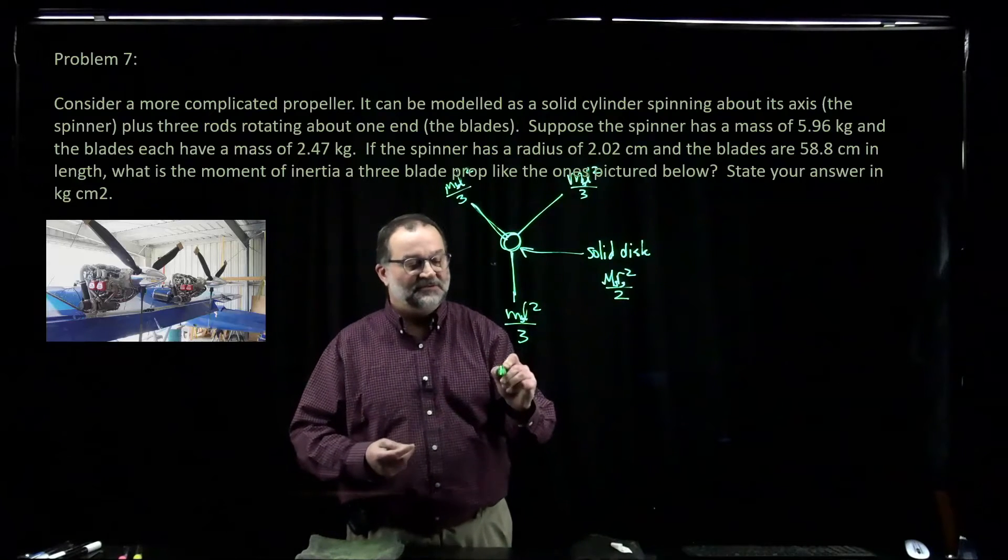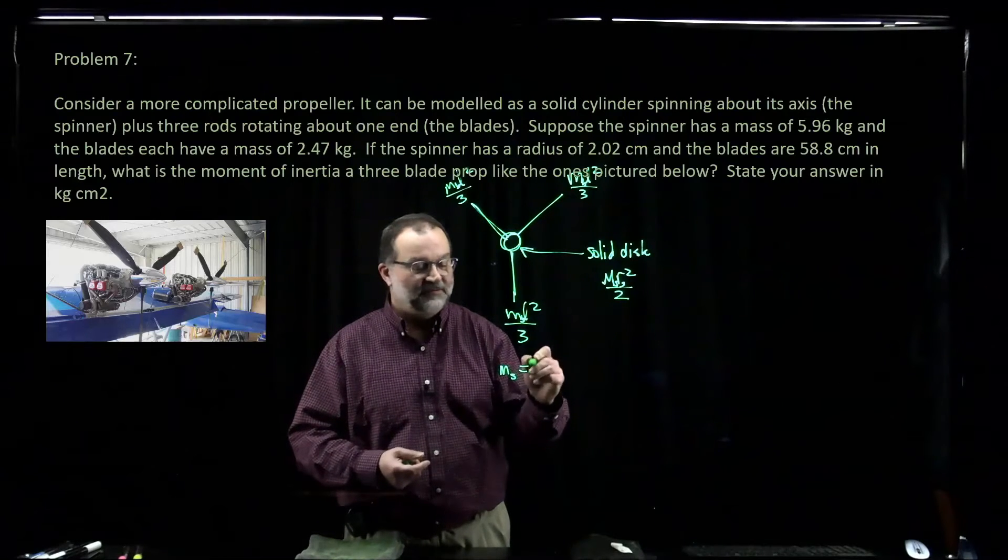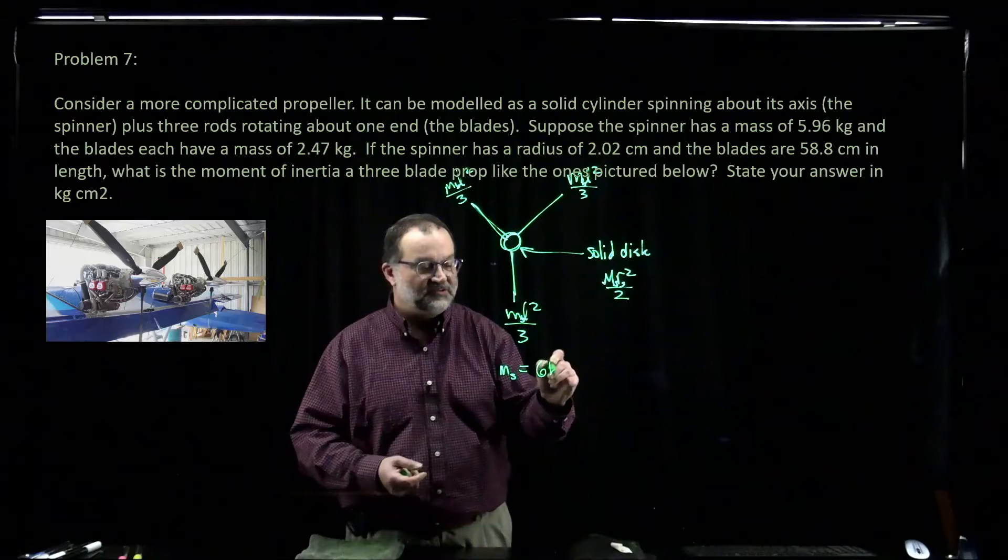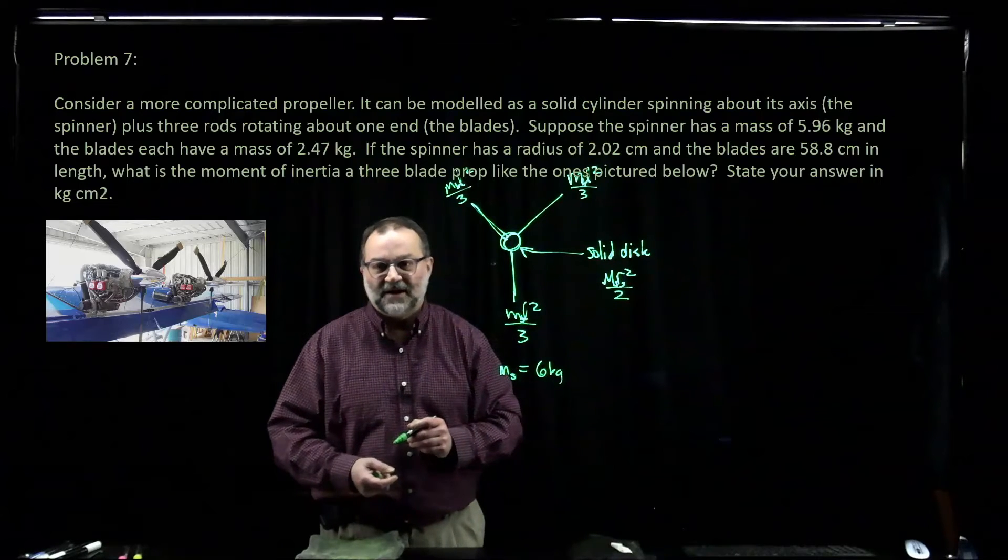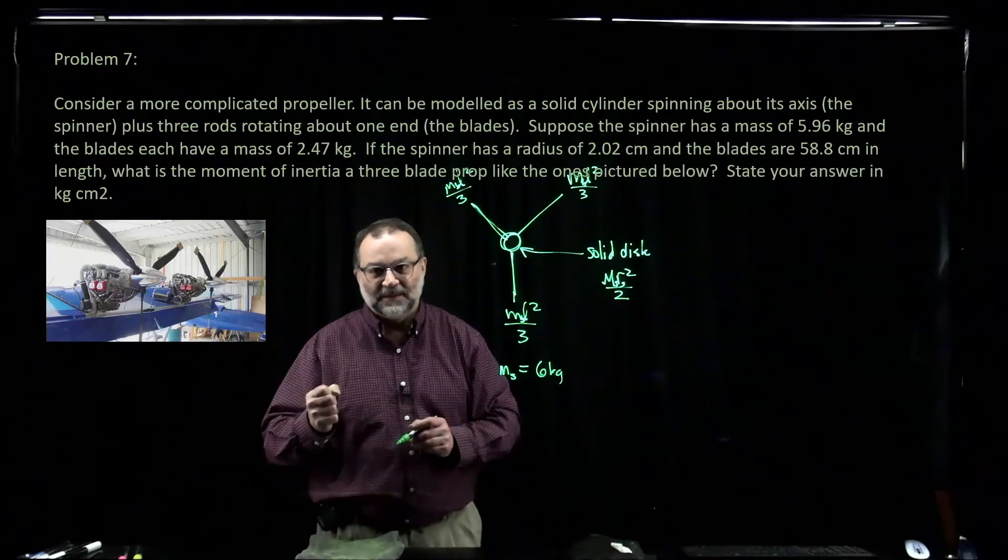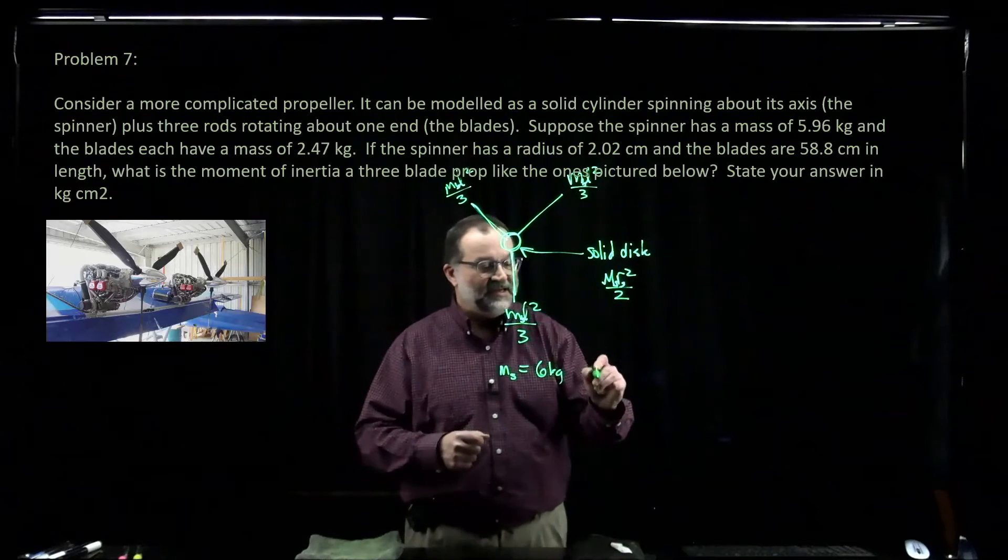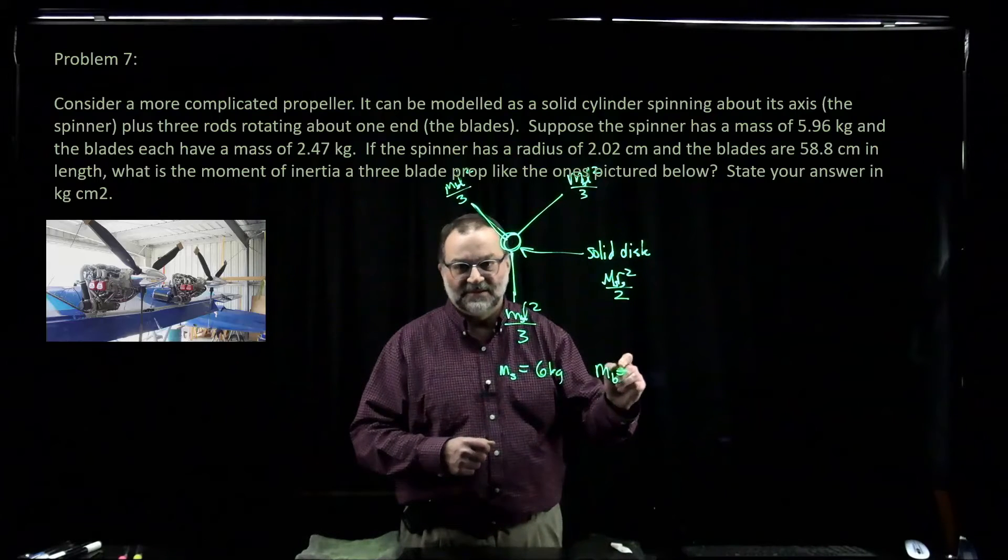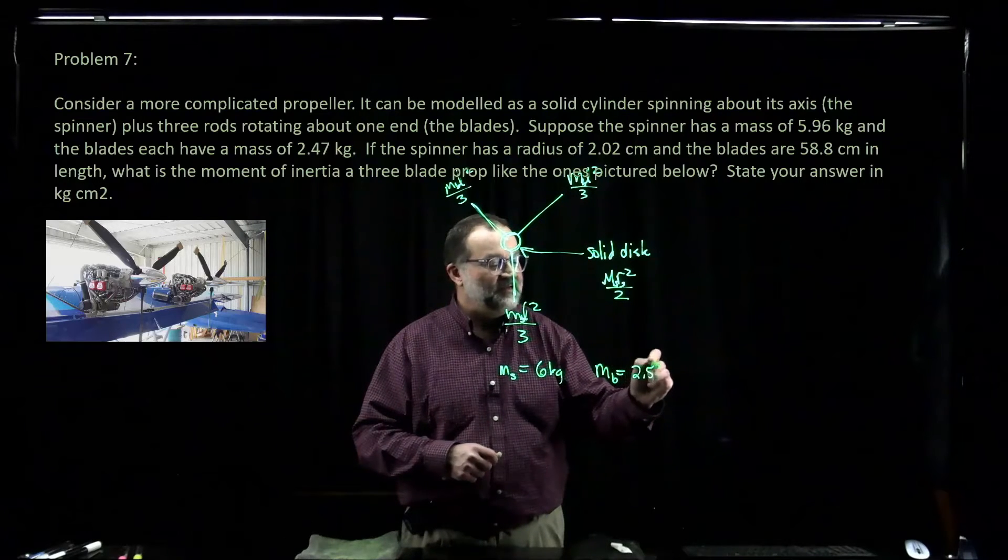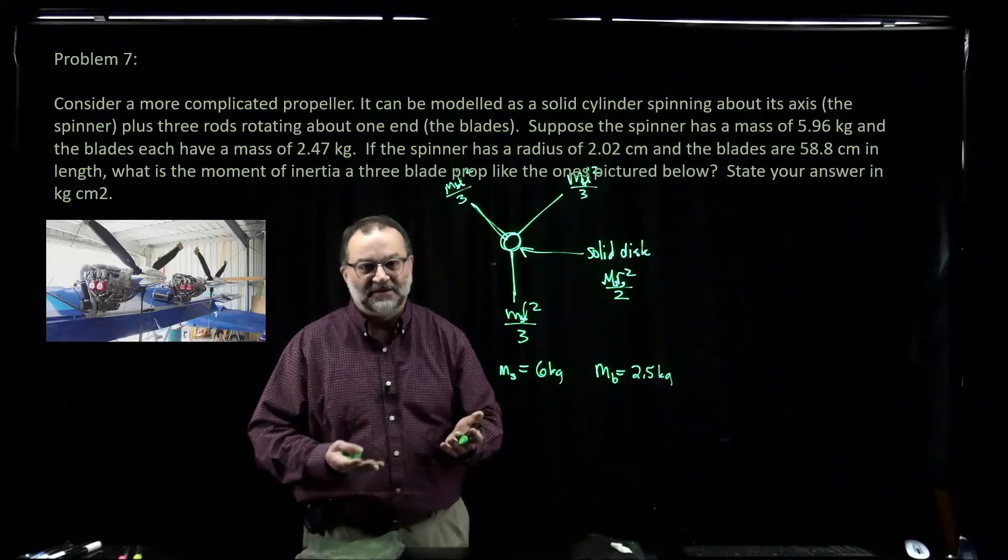We've got the mass of the spinner. So mass of the spinner is roughly, I'm just going to put six kilos. We've got the mass of the blades. Each blade is 2.5 kilos.